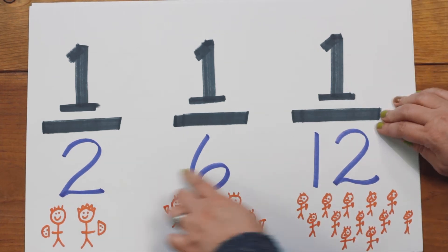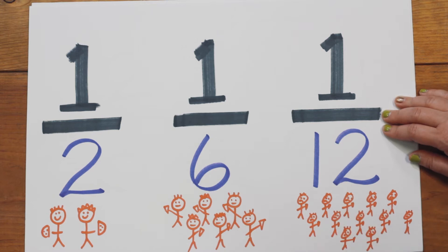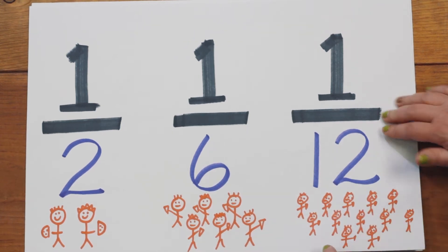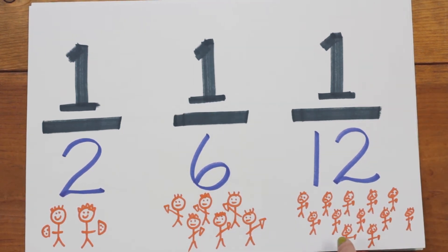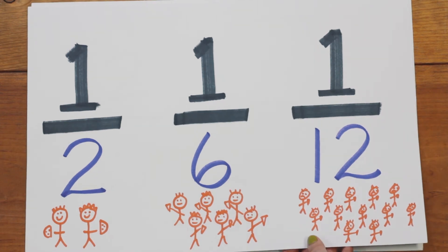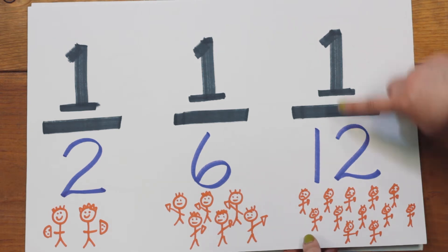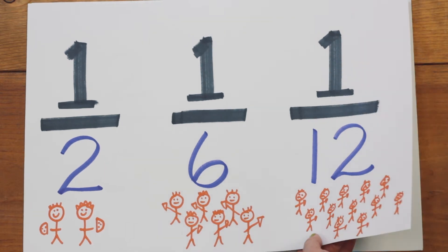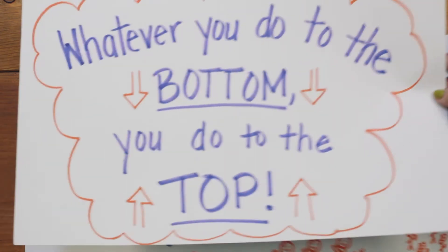As the bottom number of a fraction grows, the fraction actually gets smaller. So when we want to make an equivalent fraction, you have to realize that we have to grow or shrink the top number and the bottom number equally. So again, we're going back to this.